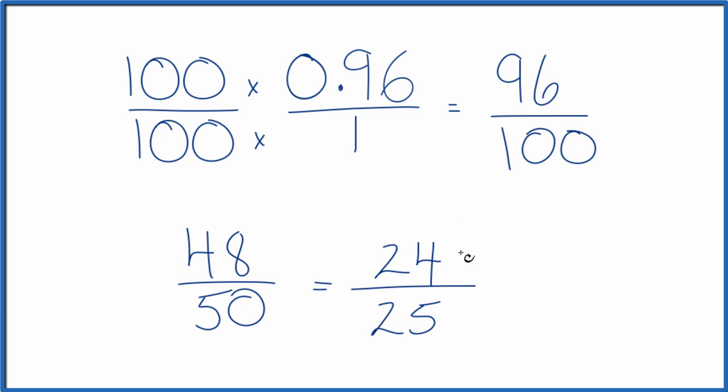And we can't simplify this any further. So when we write the decimal 0.96 as a fraction, in simplest form, it's 24 over 25. And all of these are equal. If you divide 24 by 25, 48 by 50, or 96 by 100, you get 0.96.